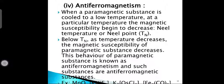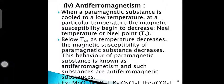Anti-ferromagnetism. What is anti-ferromagnetism? When paramagnetic substances go to a low temperature, at a particular temperature, the magnetic susceptibility begins to decrease. This critical temperature is called the Néel temperature, represented by the symbol Tn. Below the Néel point, the magnetic susceptibility of paramagnetic substances goes on decreasing with increase in temperature. This behaviour of paramagnetic substances is known as anti-ferromagnetism, and such substances are called anti-ferromagnetic substances.